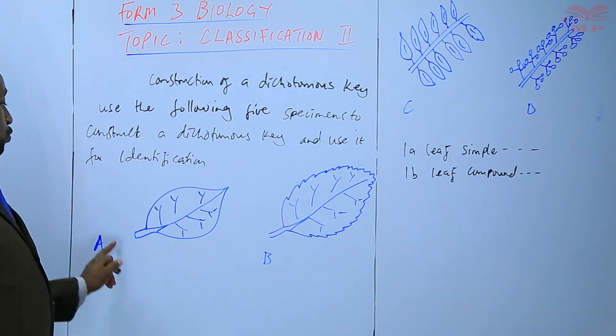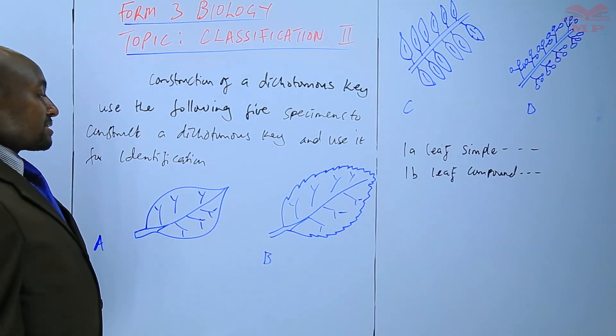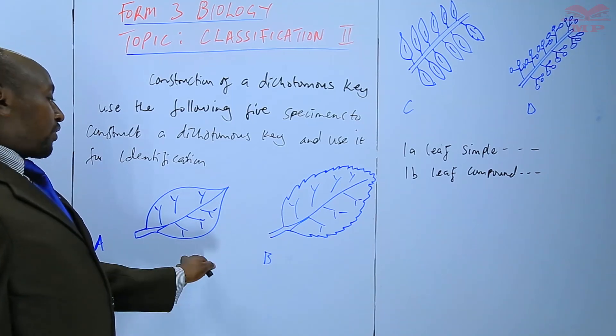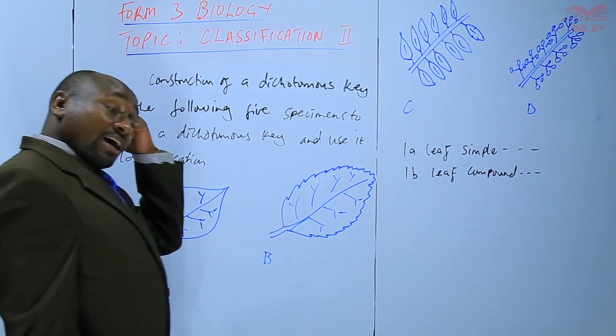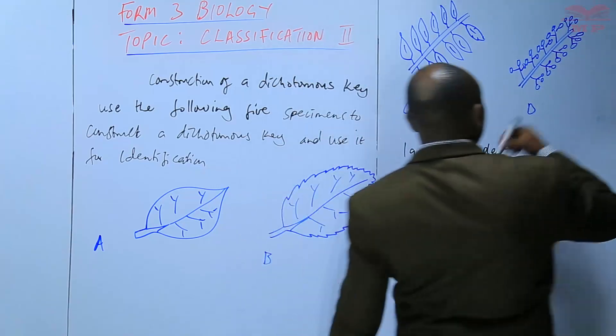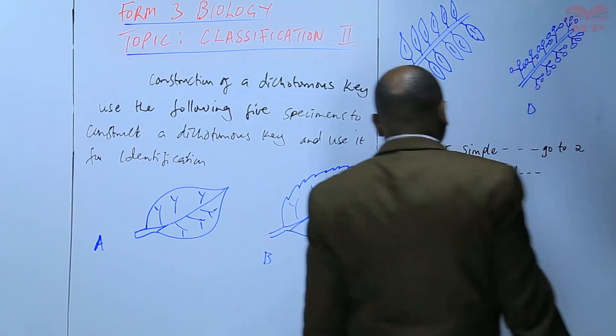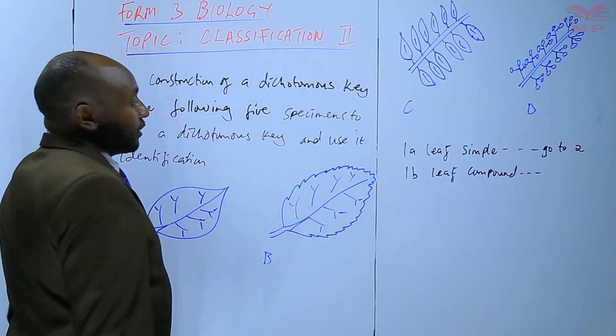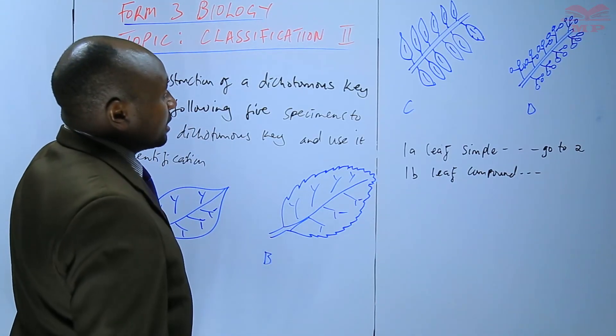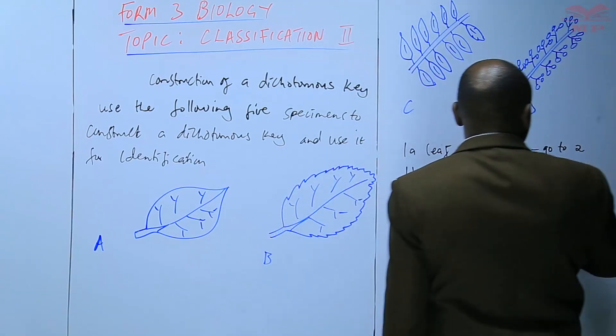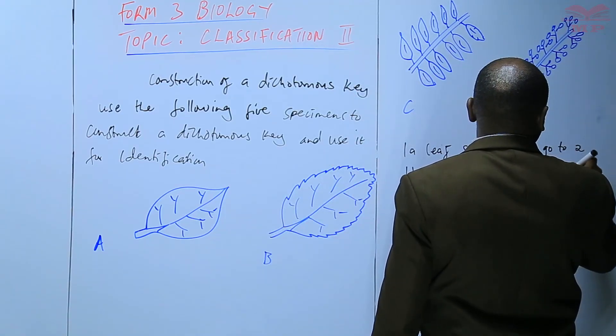The first two A and B are simple. We cannot say either A or B is simple, but we have more than one. Where we said that we have more than one, go to the next step. Go to two. For the case of compound, we also have two, C and D, they are compound. We can say go to the next step, go to three.